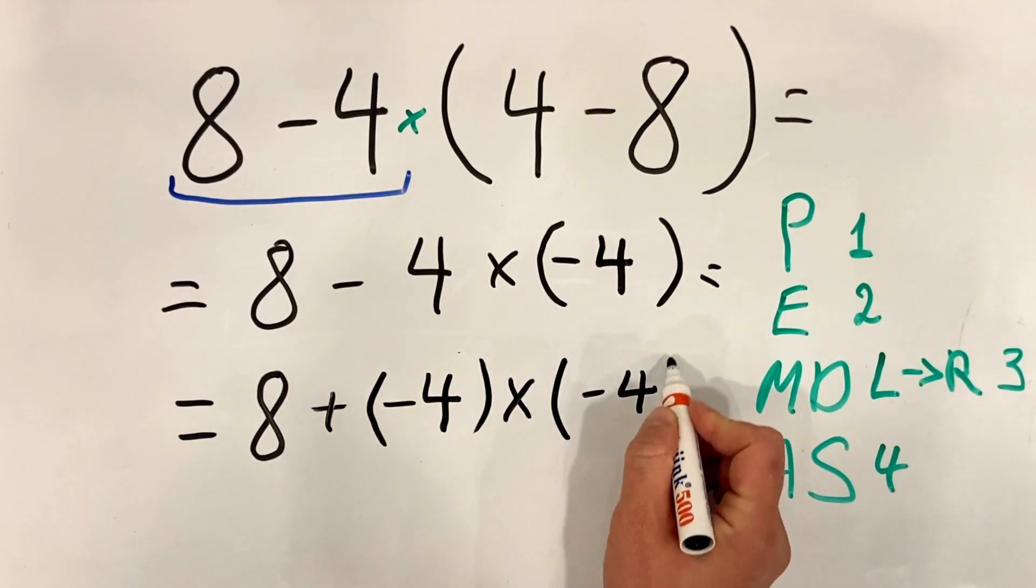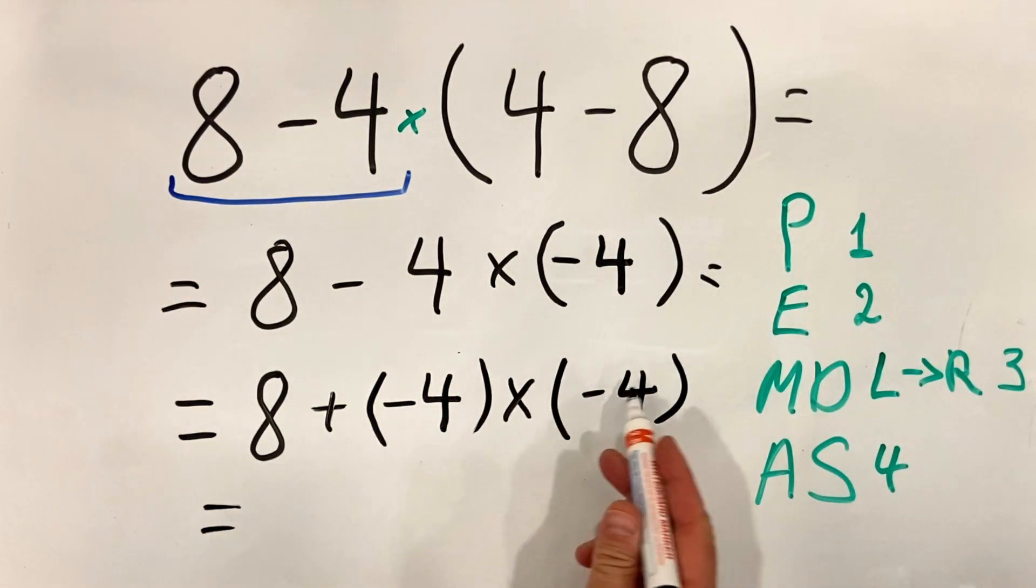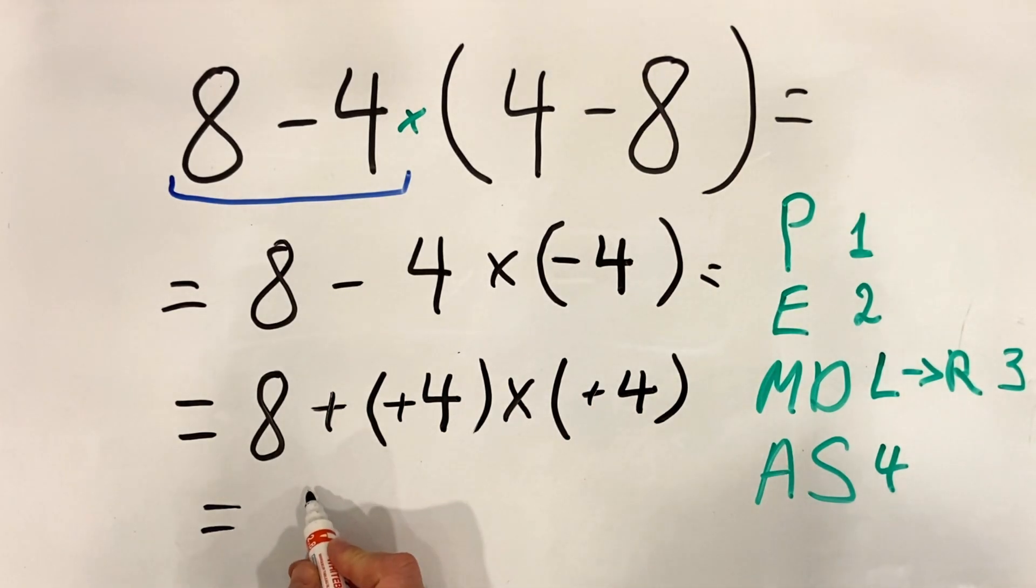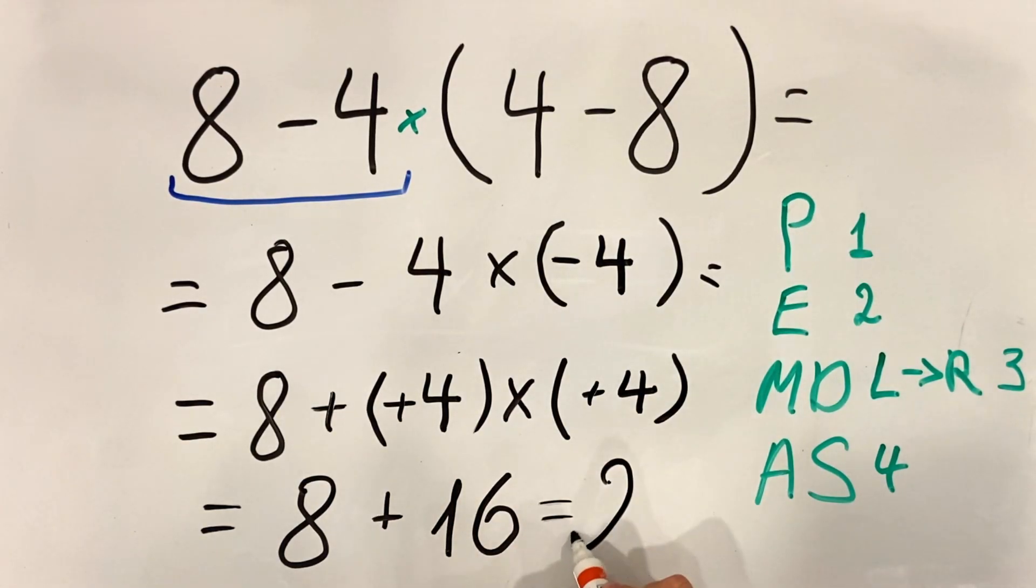by minus four. So now what we have is minus four multiply by minus four. When we have two minuses, it becomes plus. So we get eight plus 16, which equals 24.